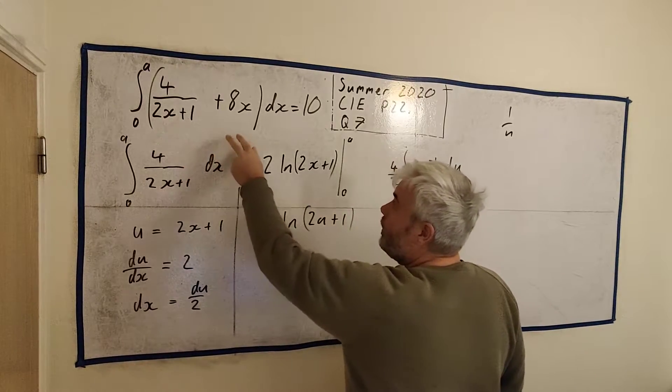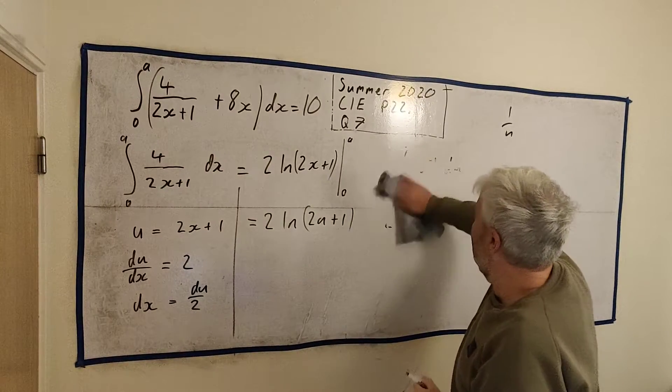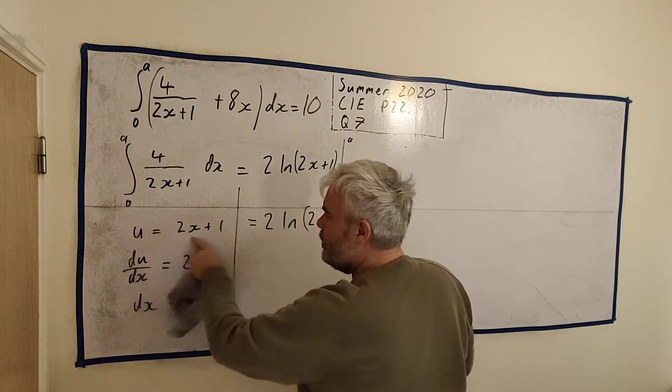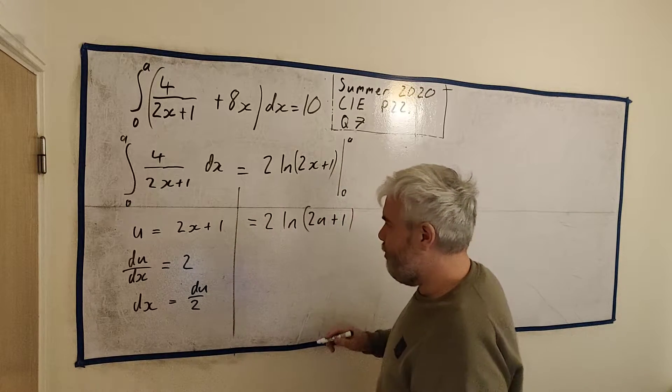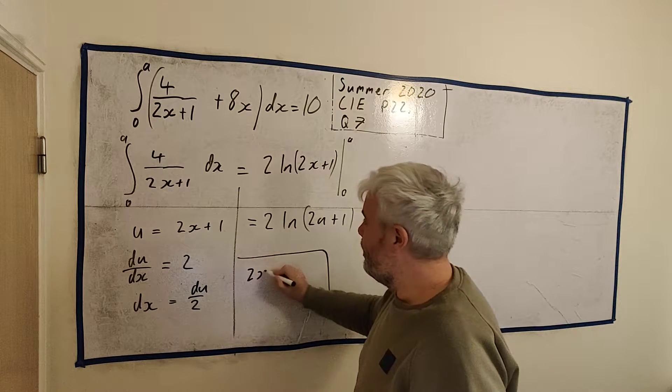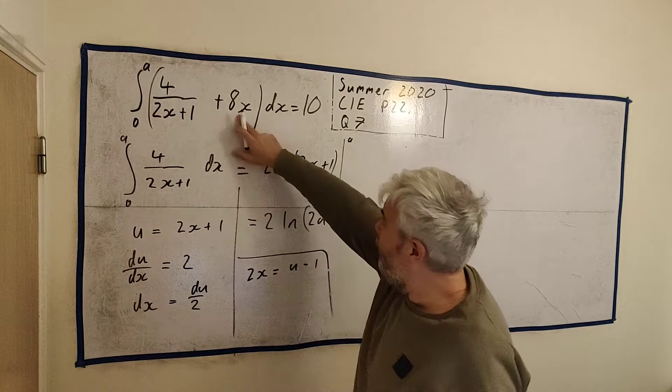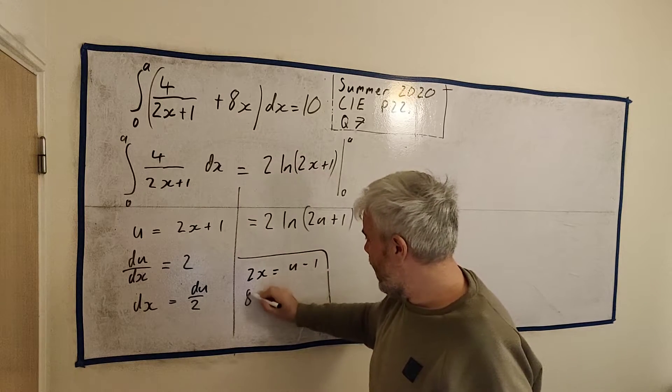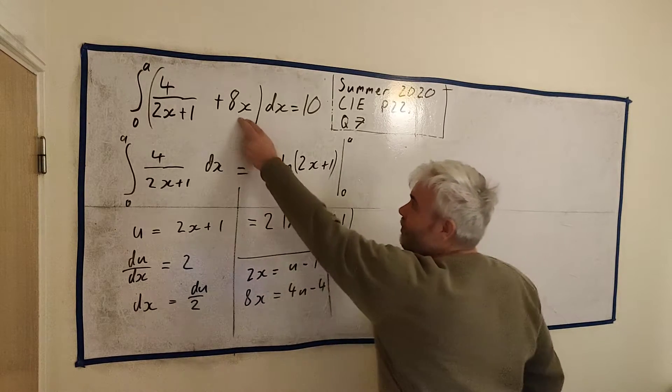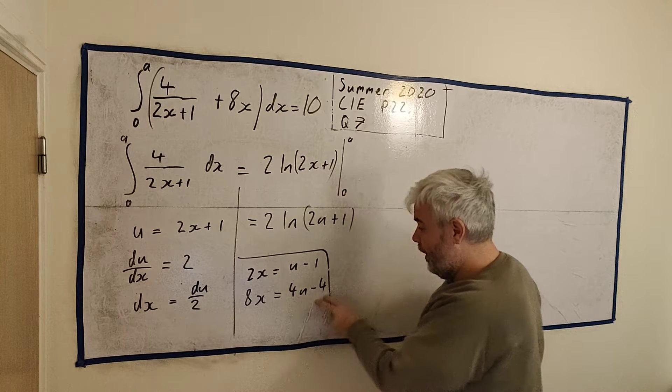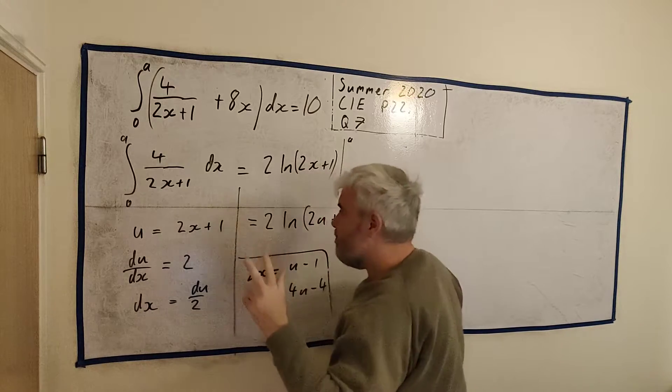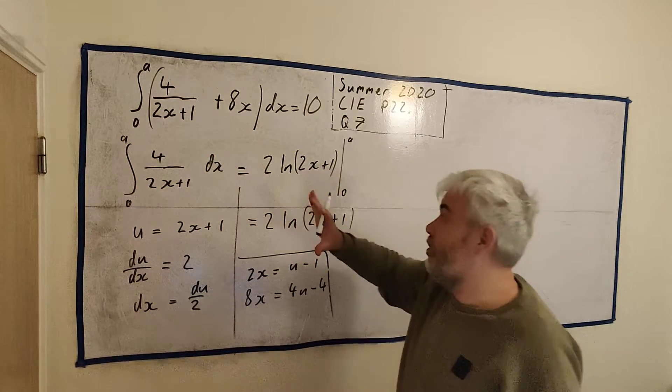So the integral of this is 2 natural log of 2x plus 1, and we have to evaluate that between 0 and a. And that's pretty much it. Let me just put in the next part. We put a into this, we get 2 natural log of 2a plus 1 minus, put 0 in. 2 zeros or 0 plus 1, so we get natural log of 1. Natural log of 1 is 0. So that's it. This is all it equals to.